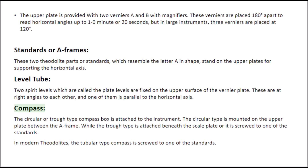Compass. The circular or trough type compass box is attached to the instrument. The circular type is mounted on the upper plate between the frame, while the trough type is attached beneath the scale plate or is screwed to one of the standards. In modern theodolites, the tubular type compass is screwed to one of the standards.